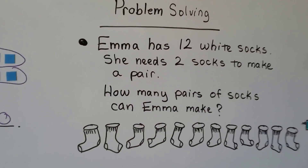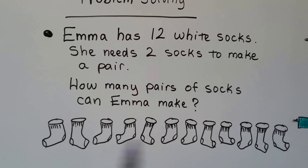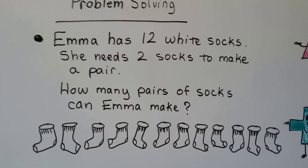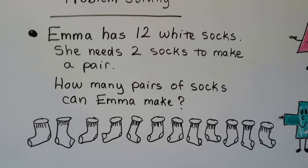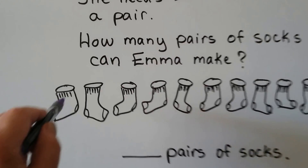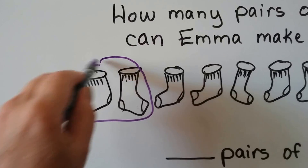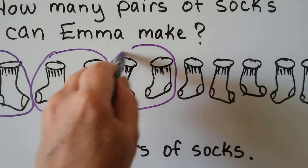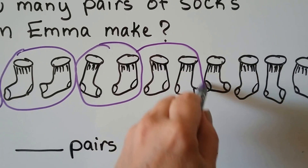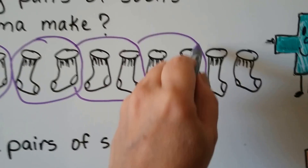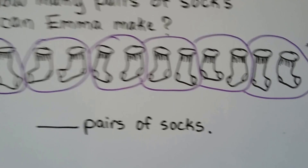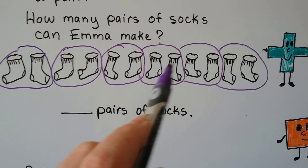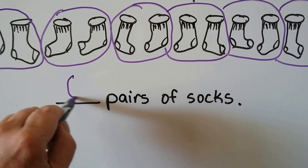Let's try some problem solving. Emma has twelve white socks, and she needs two socks to make a pair. She doesn't want to wear just one sock — she needs two socks to make a pair. So how many pairs of socks can Emma make? Here are the twelve socks. We need two to make a pair, so that's one pair, two pairs, three pairs, four pairs, five pairs, six pairs of socks. We put them in groups of two to make pairs, and she can make six pairs of socks.